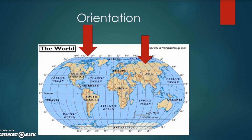Then we have lines of latitude and longitude. These are lines of longitude — they run north to south across the globe. And these are lines of latitude that run east to west. They work as a grid system to show you exactly where you are on Earth's surface.